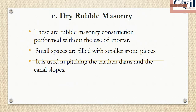The last category of rubble masonry is dry rubble masonry. In this construction, no mortar is used. Small spaces are filled with small-sized stones.